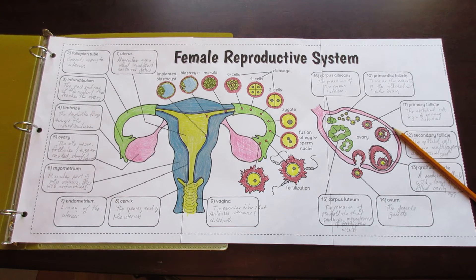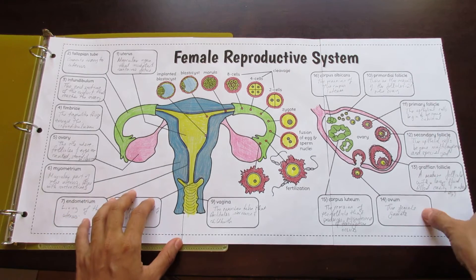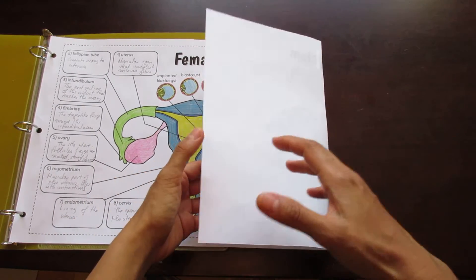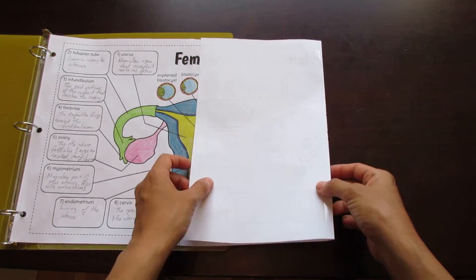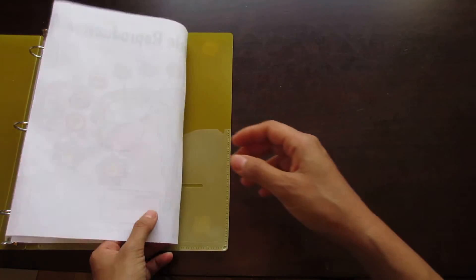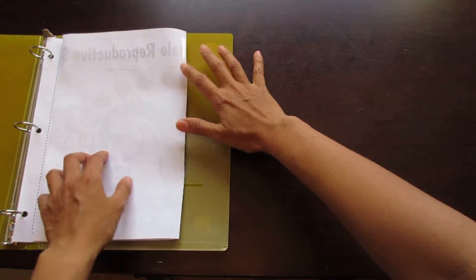This is the Tang Star Science Big Female Reproductive System foldable. It's made up of three pieces of paper that when cut along the seams and taped create a foldable that fits nice and neatly into a binder without impeding the binder rings.